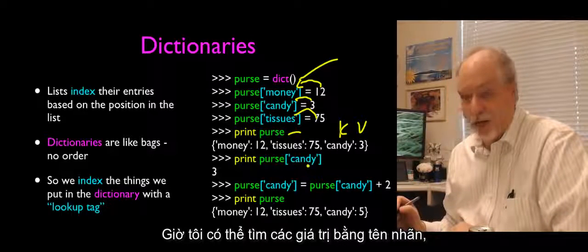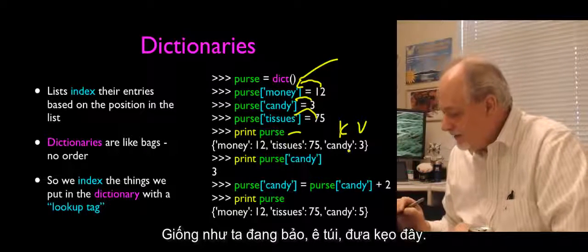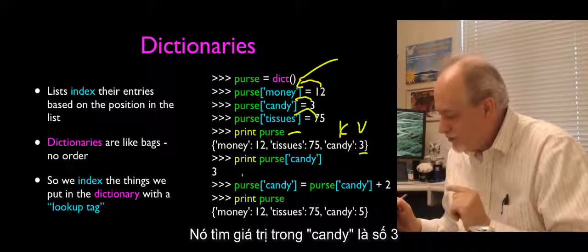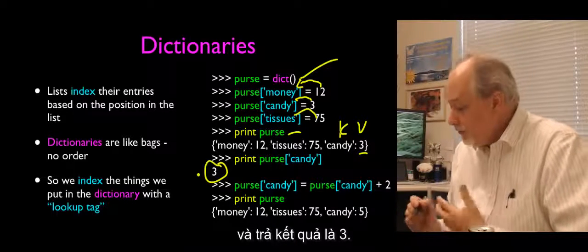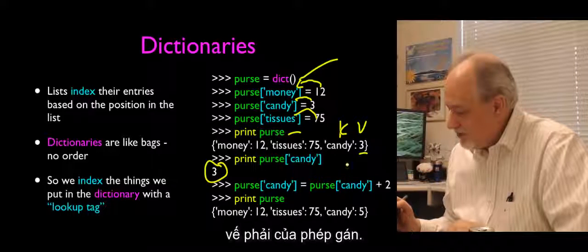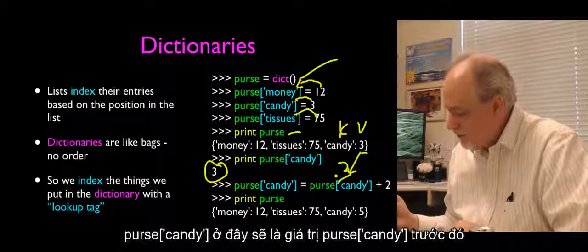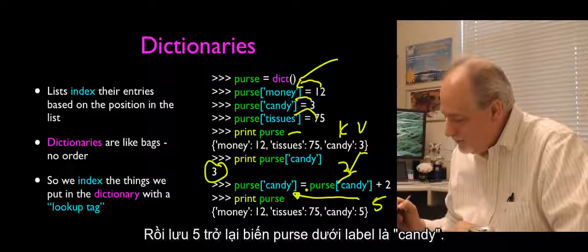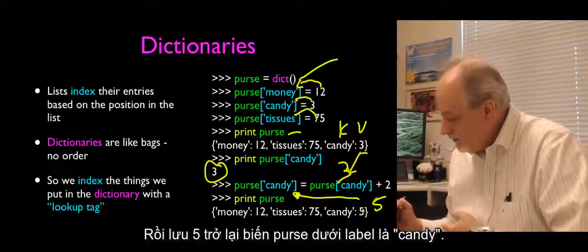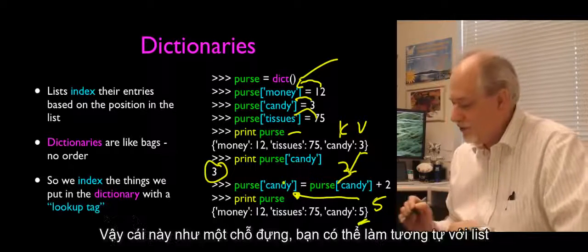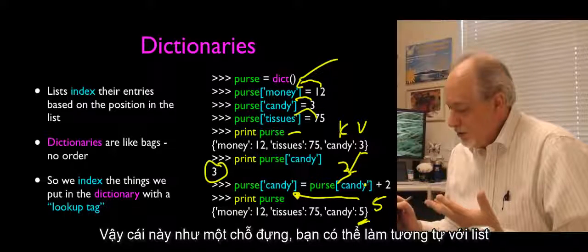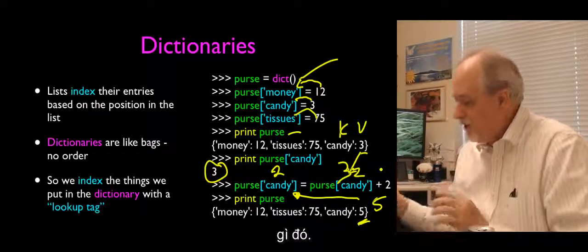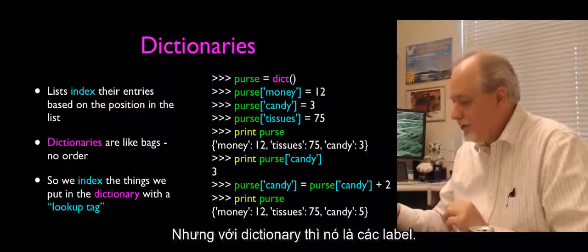I can look things up by name. Print purse sub 'candy' — it goes, finds it, gives me back the value 3. We can also put it on the right-hand side of an assignment statement: purse sub candy equals purse sub candy plus 2, which gives me 5, and then stores it back in the purse under the label 'candy.' So candy changes to 5. In dictionaries, the labels are strings — strings are very common, but you can use other things. In this chapter we'll focus on strings.